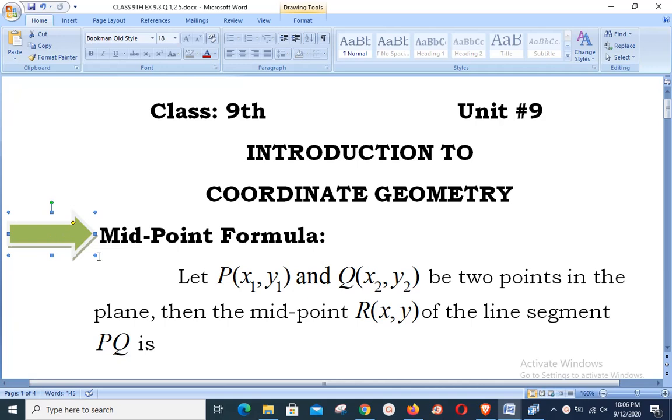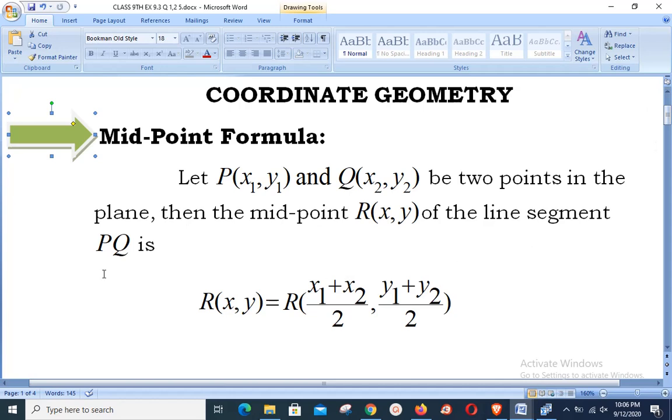Let us define the midpoint formula. It says: Let P(x₁,y₁) and Q(x₂,y₂) be two points in the plane. Then the midpoint R(x,y) of the line segment PQ is defined as R(x,y) = R((x₁+x₂)/2, (y₁+y₂)/2). That is, the sum of the x-coordinates and the sum of the y-coordinates, each divided by 2, provides us the midpoint formula. That is very simple and easy to remember.